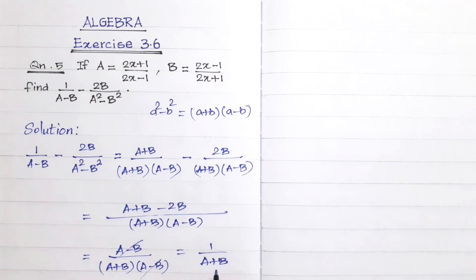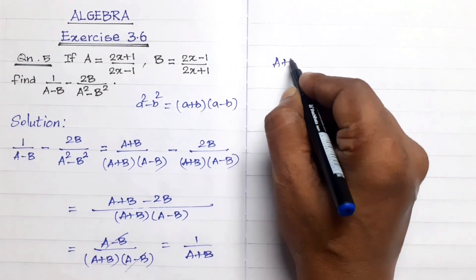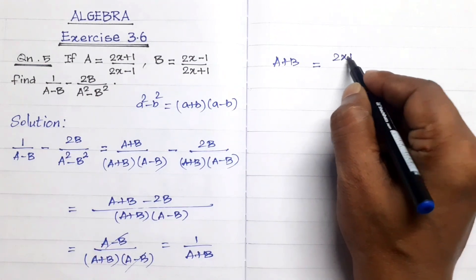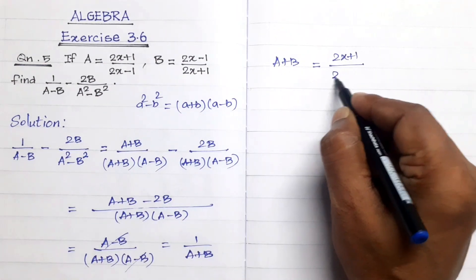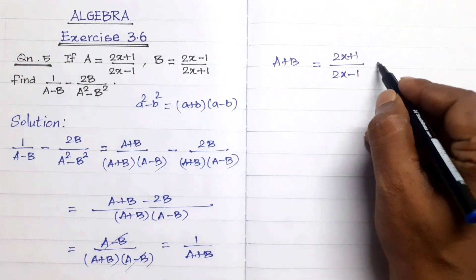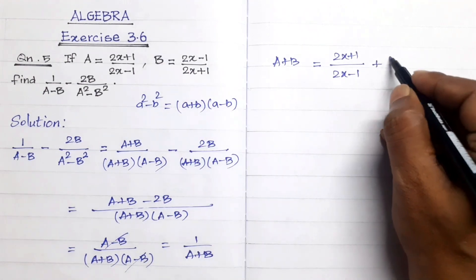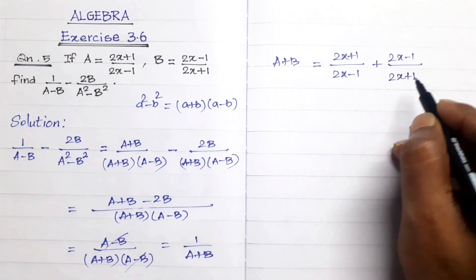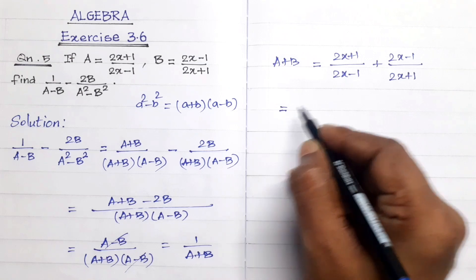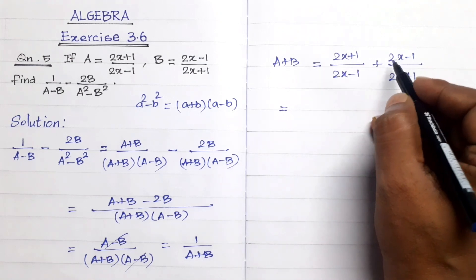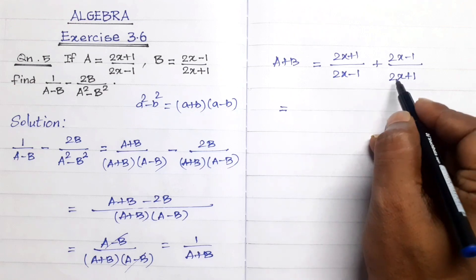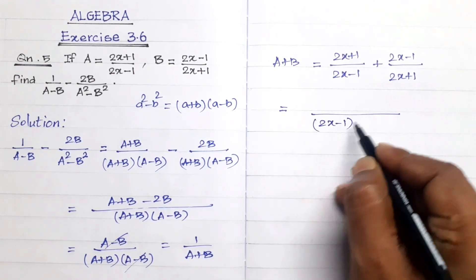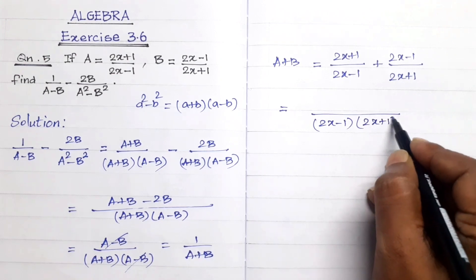Now find a plus b. a plus b equals 2x plus 1 divided by 2x minus 1, plus 2x minus 1 divided by 2x plus 1. Using cross multiplication, divide by (2x minus 1) into (2x plus 1).